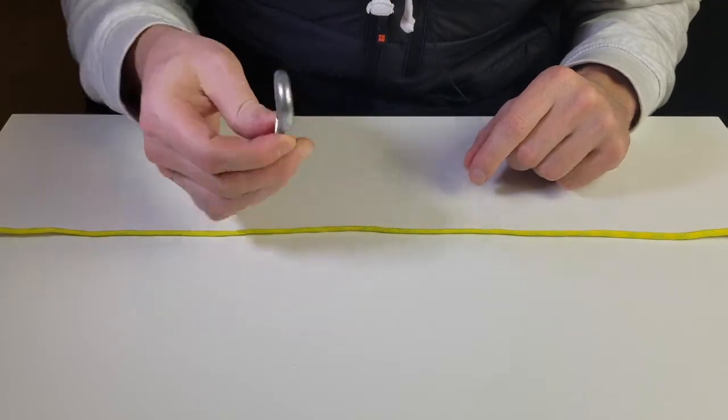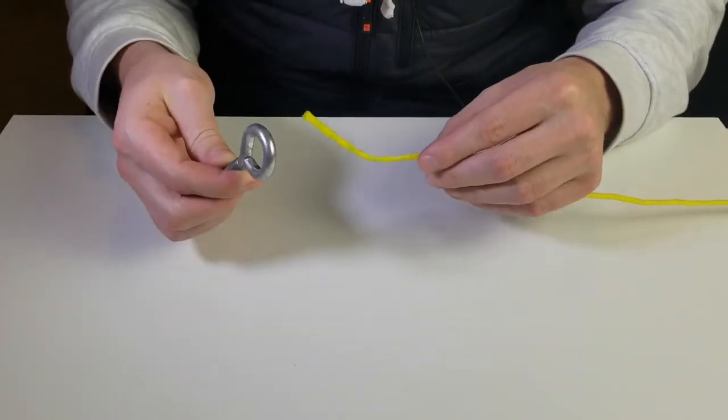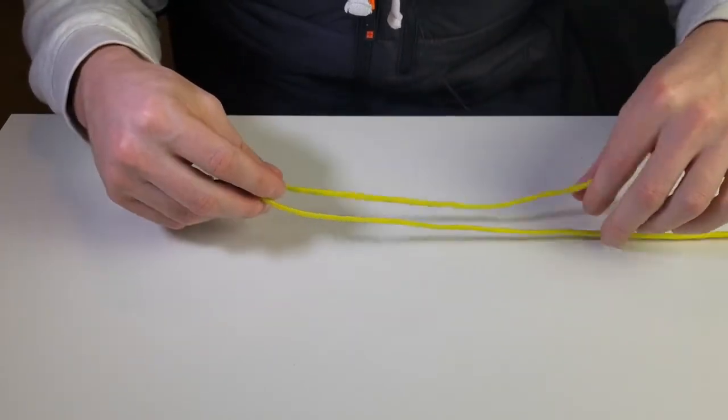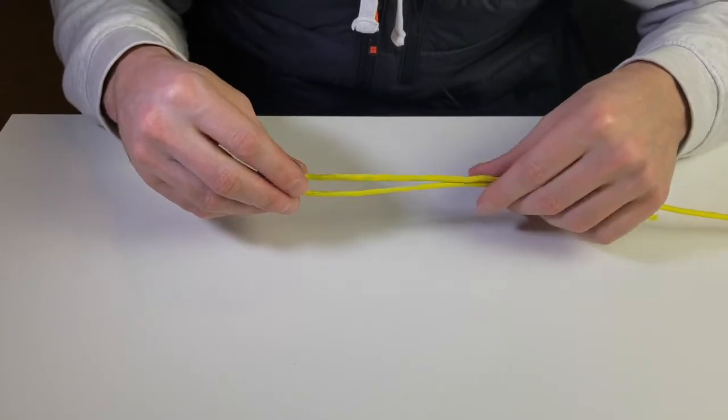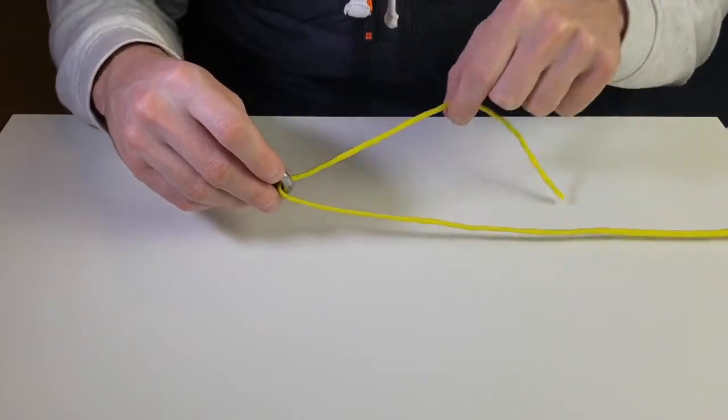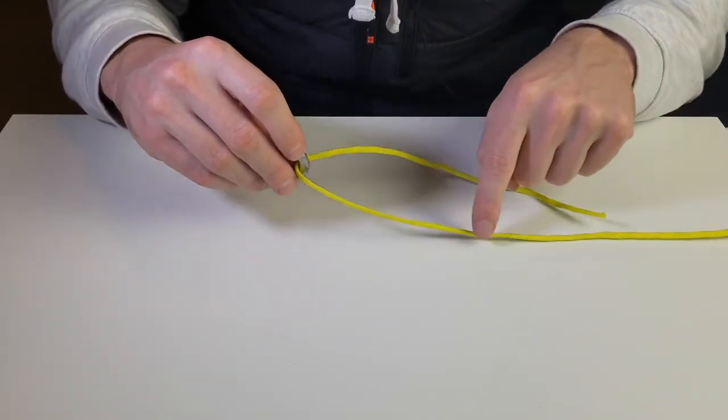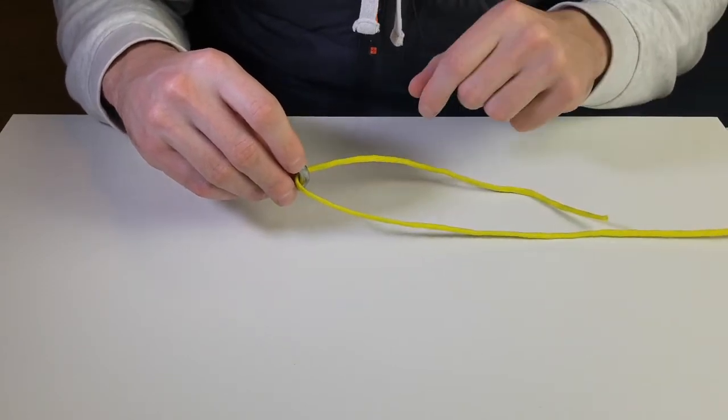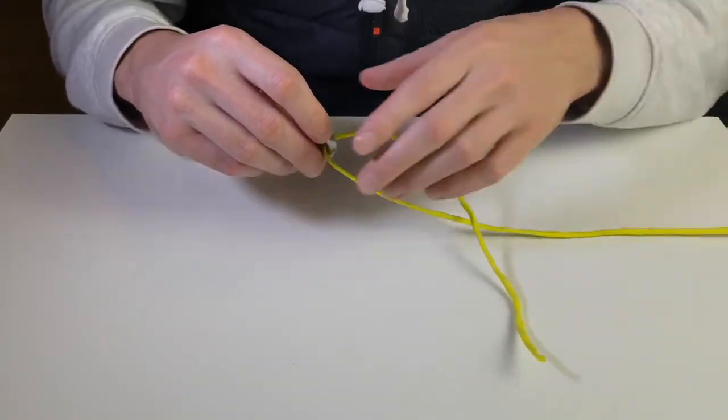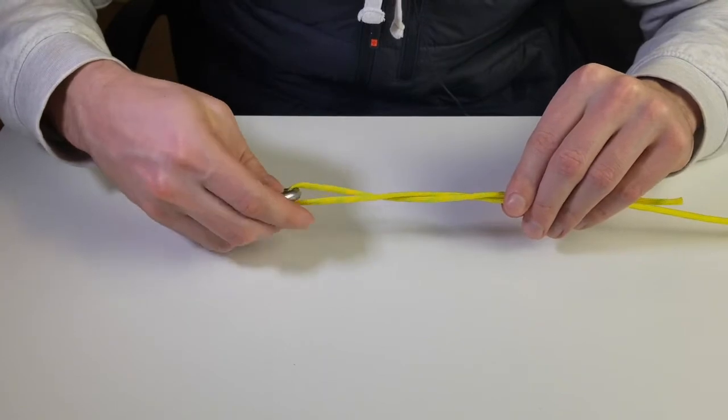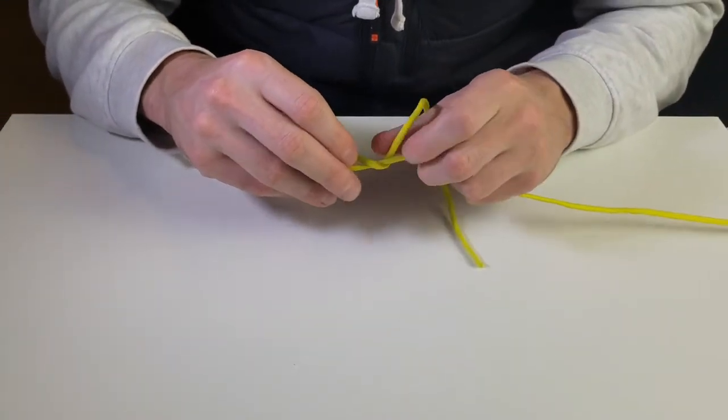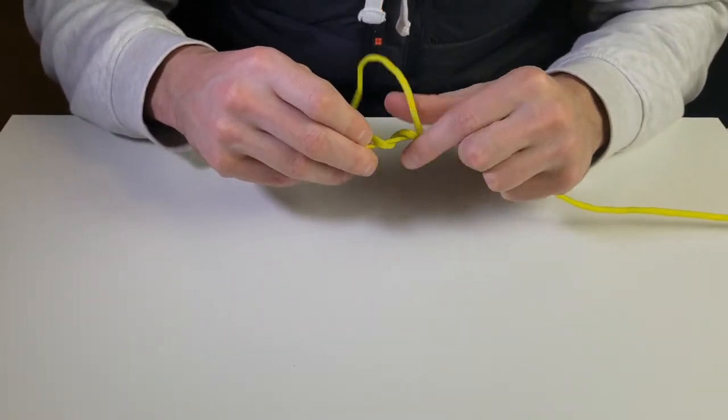The very first step is to take whatever you want to attach it to and stick the line through, and you are going to double it back like this. Now all you're going to do is take the tag end here and twist it up this line five or six times. Five or six seems to be a good number. You can physically twist this around or you can simply just hold it and twist, but they both do the same thing. I'm just going to twist it around to show you exactly what's going on. So five to six times you're going to go up.